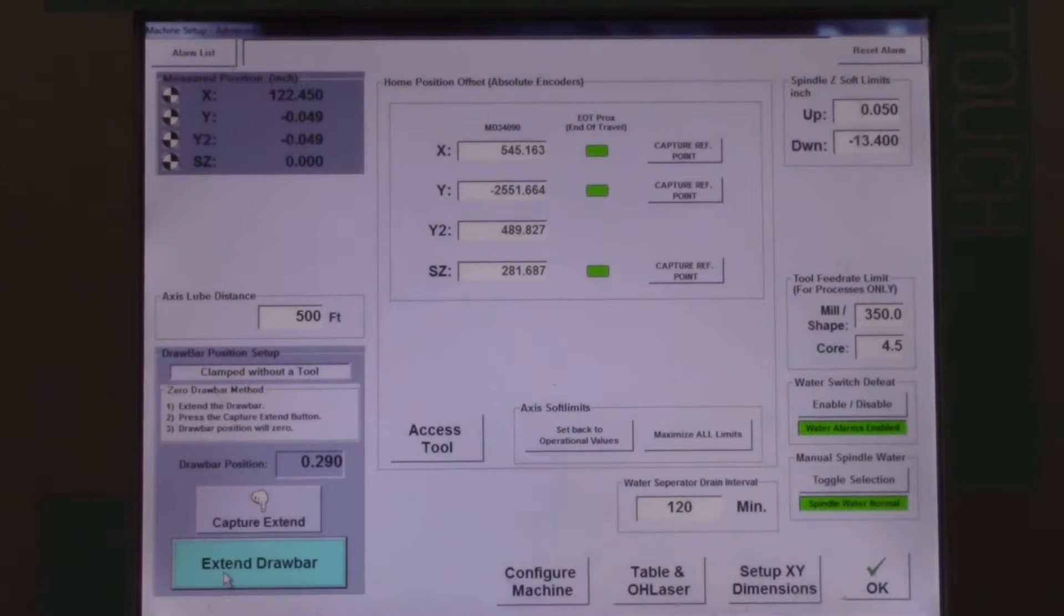Now I've already taken the old gripper set out of this spindle so the next step is to enter the advanced setup screen and press the extend drawbar button.